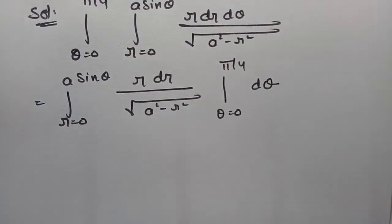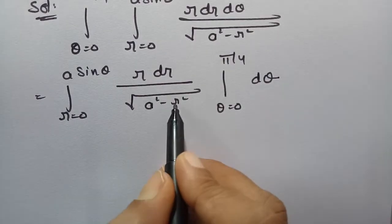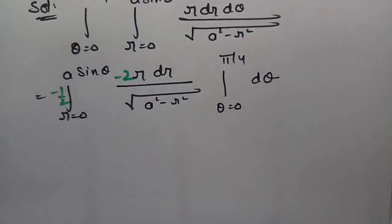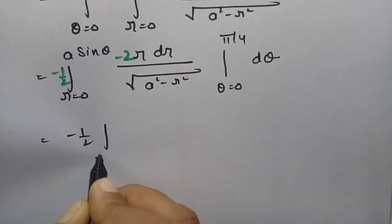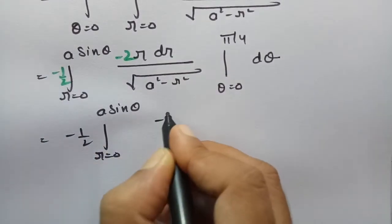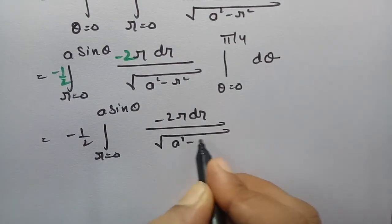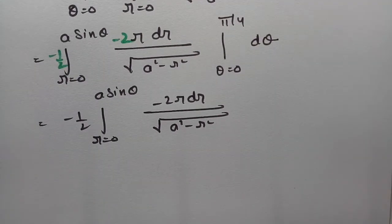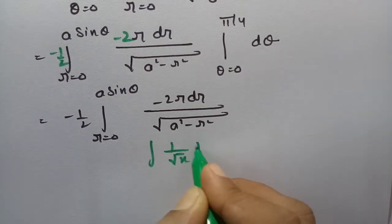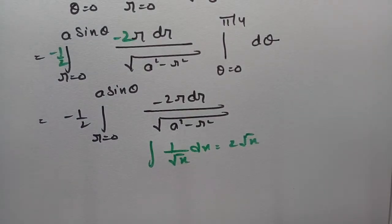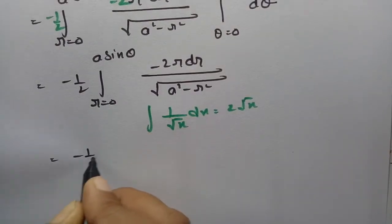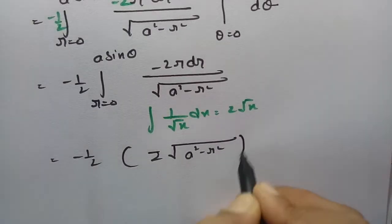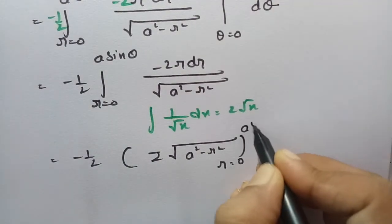First of all I will make an arrangement. For the derivative of a squared minus r squared, the derivative with respect to r squared is minus 2r. So I will multiply with minus 2 and divide with minus 2. Then minus half times integral r equal to 0 to a sin theta, of minus 2r dr by root over a squared minus r squared. Here the derivative of the inside expression is present. The formula is integral 1 by root x dx equals 2 root x. So applying this here, this will be minus half times 2 root of a squared minus r squared, between the limits r equal to 0 to a sin theta.